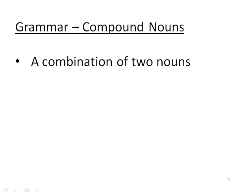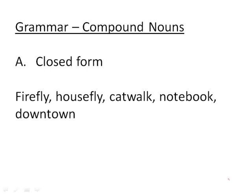A compound noun is simply a combination of two nouns. What's not so simple is whether it's closed form. You can see below: fire is a noun, fly is a noun. Closed form means there's no space between anything.